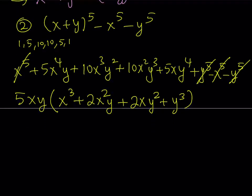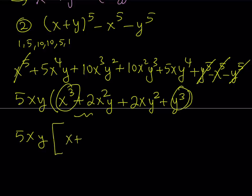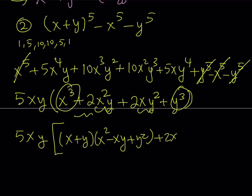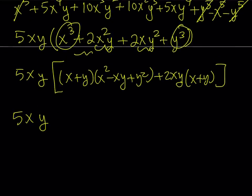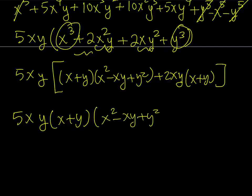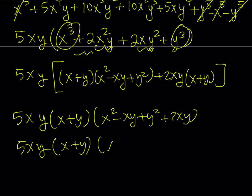Pulling out x plus y, we get x squared minus xy plus y squared plus 2xy, which gives x squared plus xy plus y squared. So with the 5xy factored out, the second expression becomes 5xy times x plus y times x squared plus xy plus y squared. Notice this same expression x squared plus xy plus y squared also appeared in the sum of squares. That is my second expression.